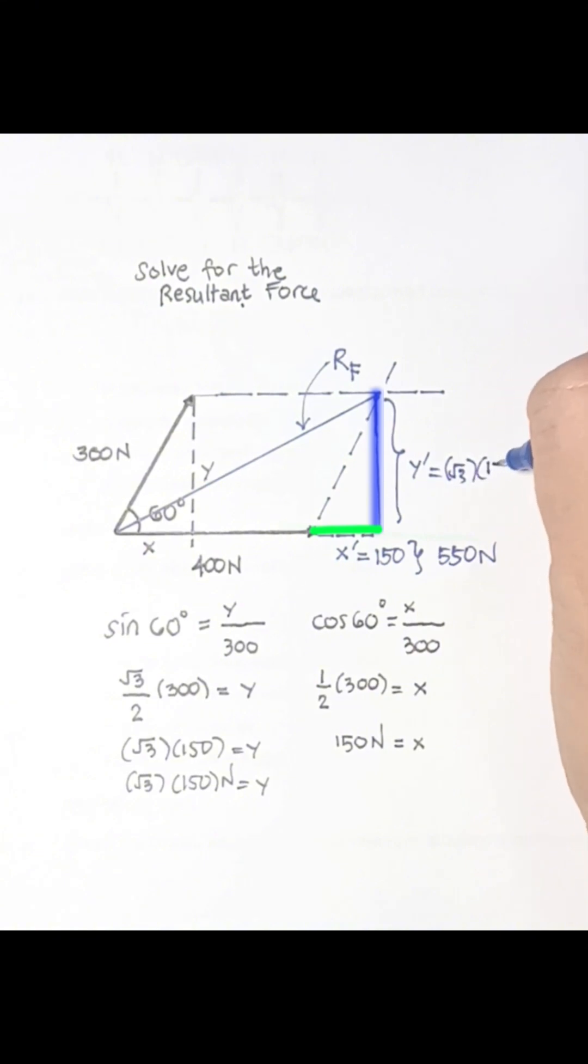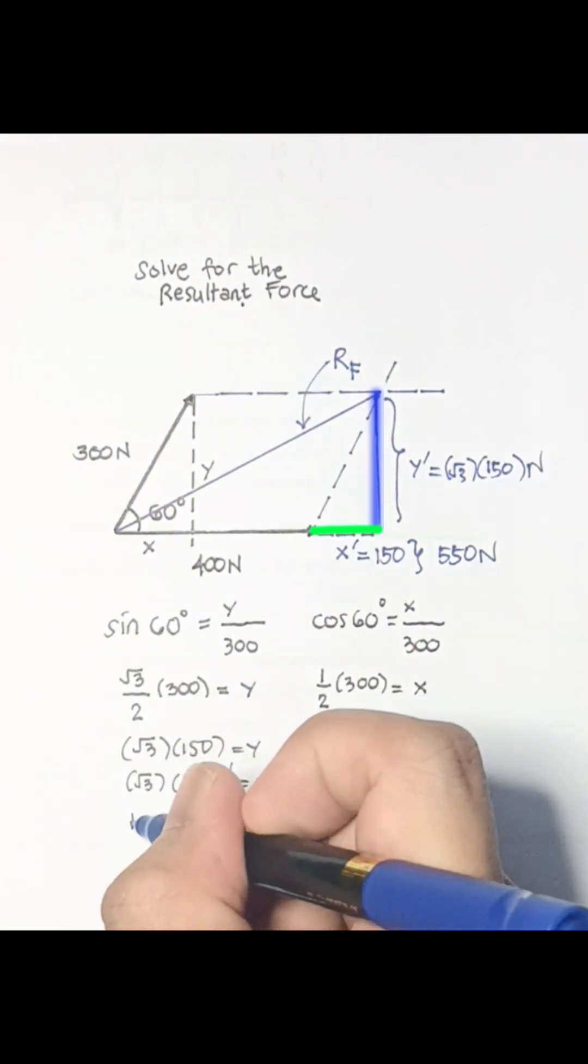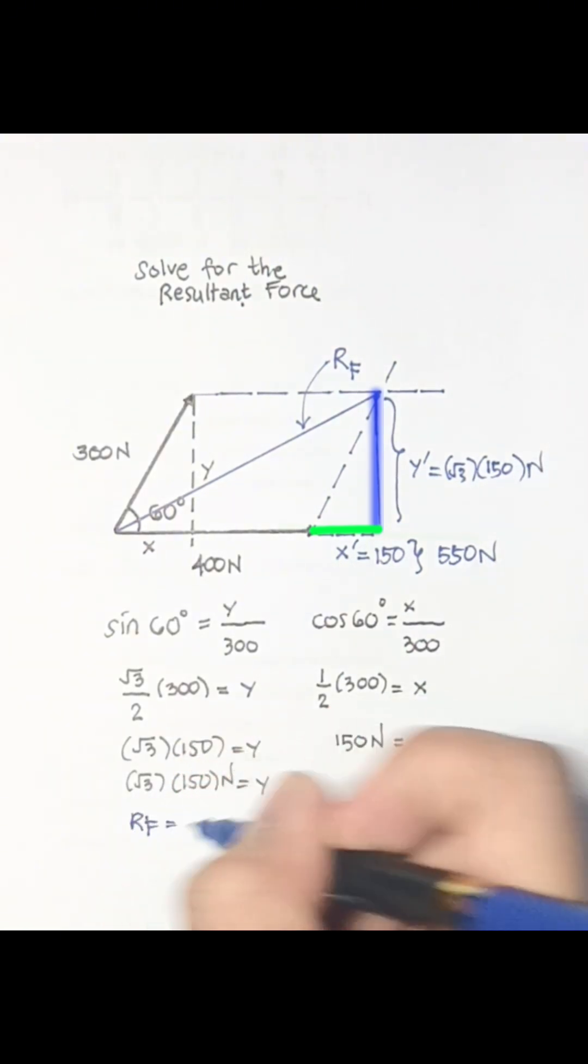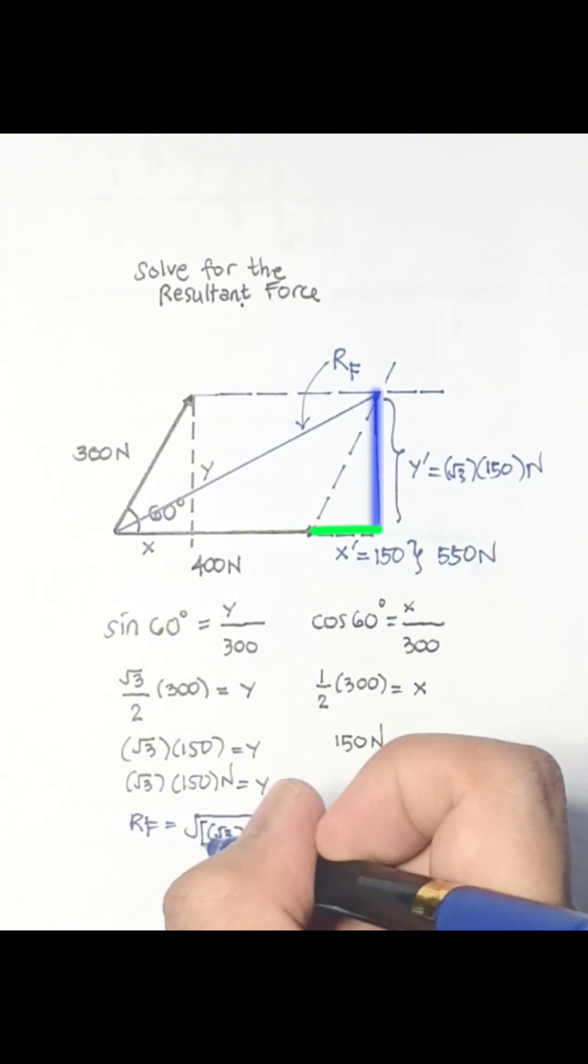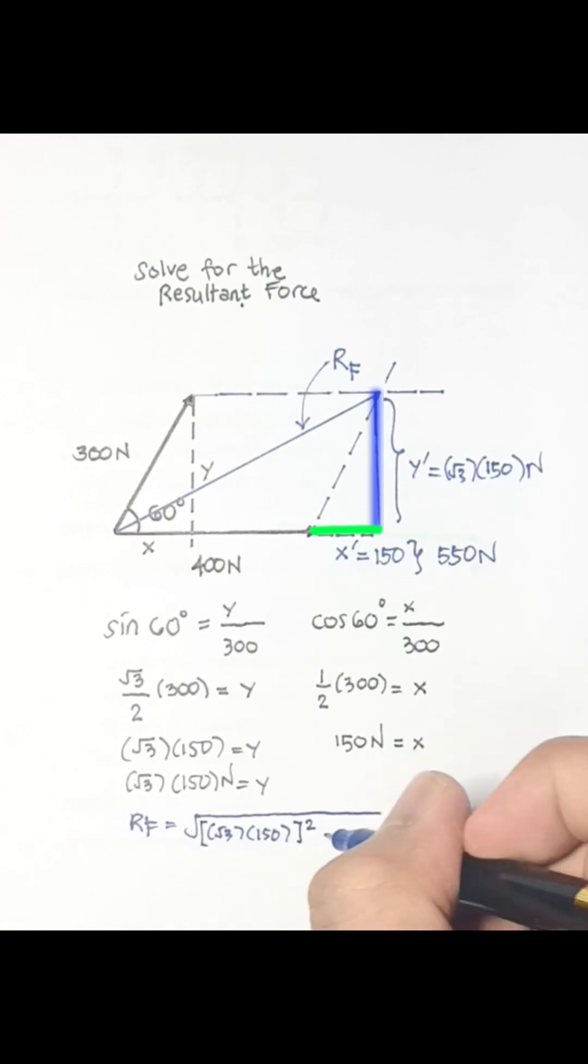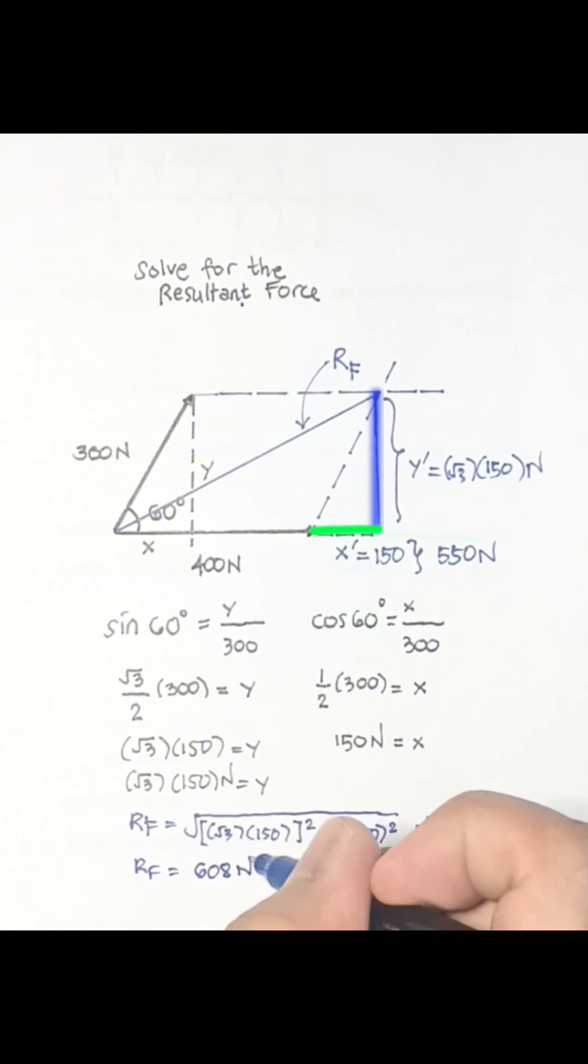We can solve for the magnitude of the resultant force using the Pythagorean formula. Rf is equal to the square root of 3 times 150 quantity squared plus 550 squared. Rf is equal to 608 newtons. Its direction is going northeast.